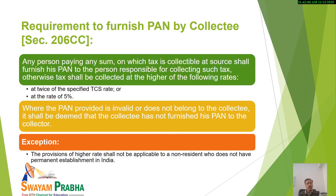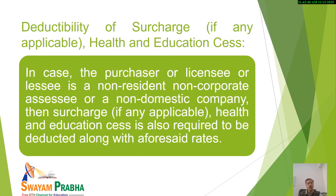One form is there — form number 27EQ. It is used for furnishing the details of the tax collected at source by the seller. It denotes what amount has been collected by the seller and it is required to be submitted on a quarterly basis by the seller. Now, what is the basic difference between TDS and TCS? TDS is tax deduction at source and TCS is tax collection at source.